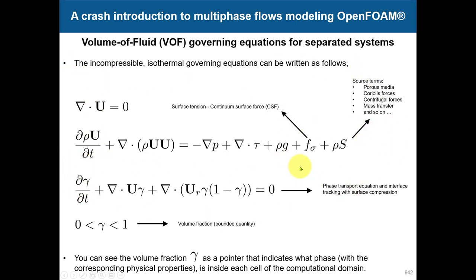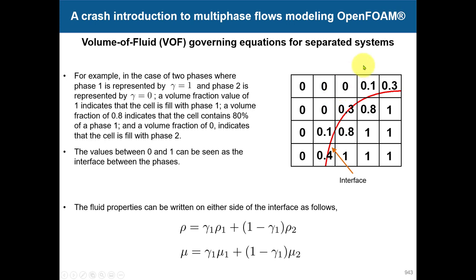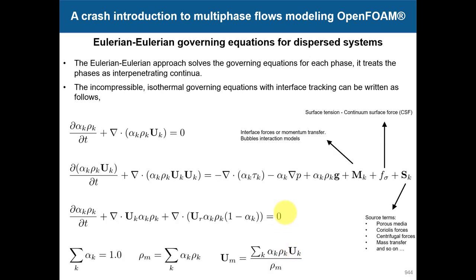This alpha tracking equation is similar to the pure convection equation, and even though it seems simple we need very good numerics — specific methods are implemented to solve it accurately. Where alpha equals zero you have one phase, where it equals one you have the other, and the interface is typically represented around 0.5. Based on the alpha value, you select properties for each phase. That's all — relatively simple.